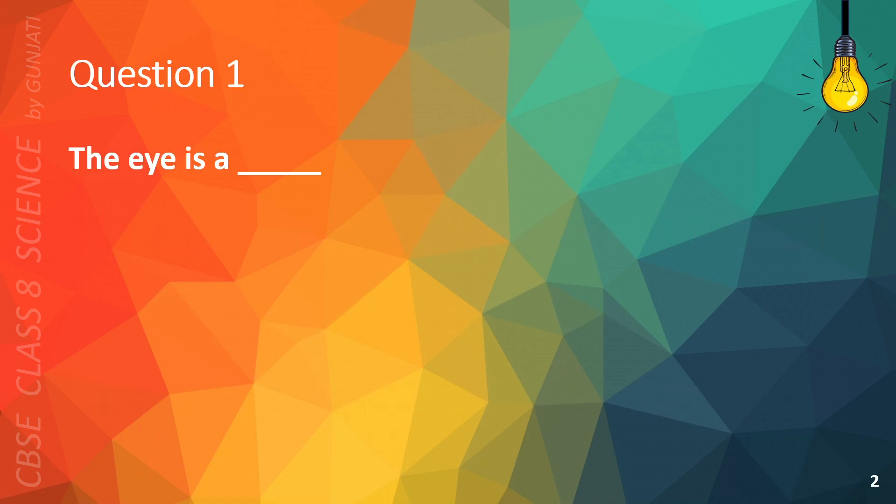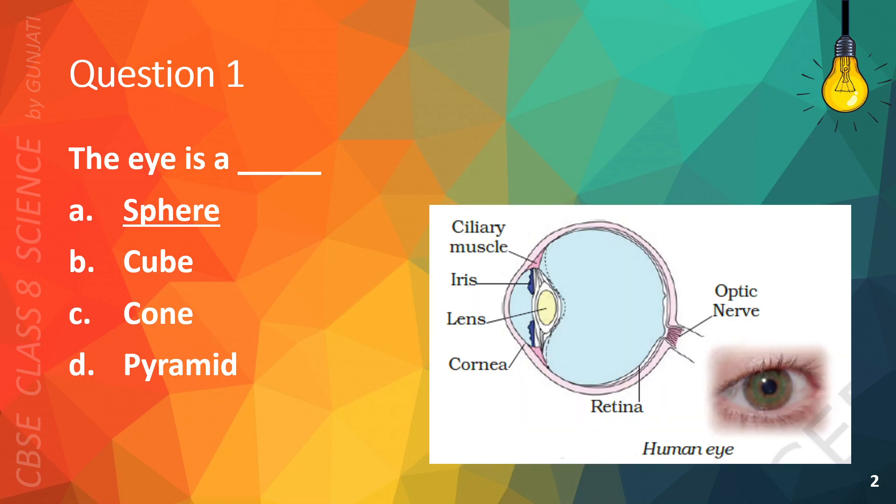Question 1. The eye is a A. Sphere, B. Cube, C. Cone, or D. Pyramid. The correct answer is A. Sphere. This is a picture of the human eye.